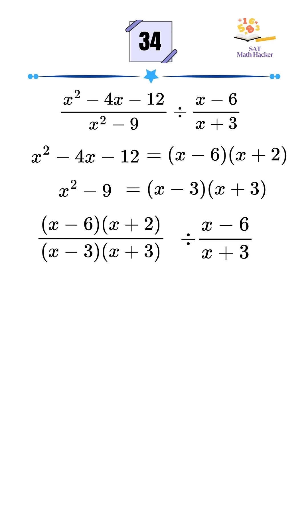We change the division to multiplication and flip the second fraction. That gives us x minus 6 times x plus 2 over x minus 3 times x plus 3 multiplied by x plus 3 over x minus 6.